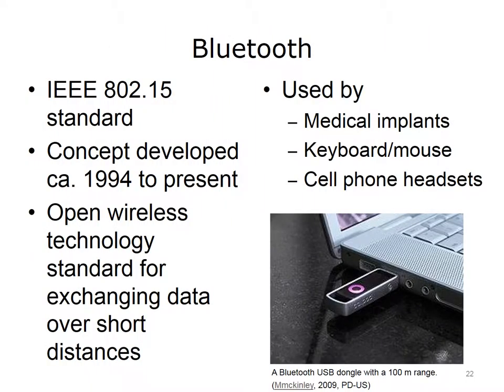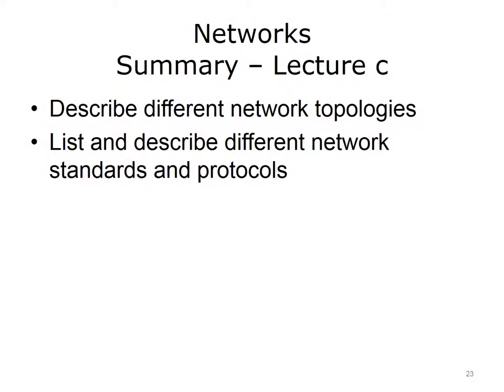The IEEE 802.15 standard relevant to Bluetooth was developed in approximately 1994 and continues to evolve. Bluetooth represents an open wireless technology standard for exchanging data over short distances — usually about 30 to 50 feet — from fixed and mobile devices. Bluetooth is used in devices such as medical implants, keyboards, mouse devices, and cell phone headsets. This concludes Lecture C of Networks. In summary, this lecture discussed different network topologies and different network standards and protocols.